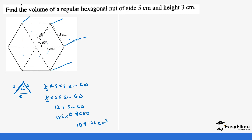Remember, we do not only have one triangle forming the hexagon — there are six triangles. So you multiply what you've gotten by six to give 649.5 centimeters squared — still in area units. When you take 649.5 centimeters squared and multiply it by the height of 3 centimeters...